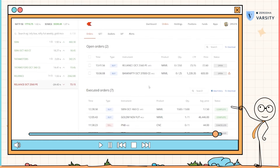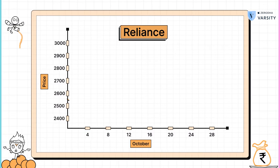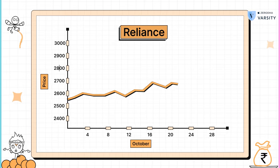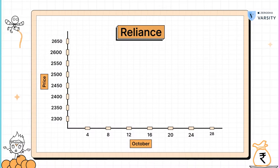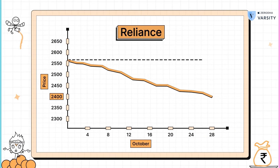Now, while we wait for the order to get executed, let's try and understand what are the likely outcomes possible by expiry. As you now very well know, there are only three possible outcomes. One, the stock price of Reliance increases. Two, the stock price of Reliance stays flat. Three, the stock price of Reliance declines.